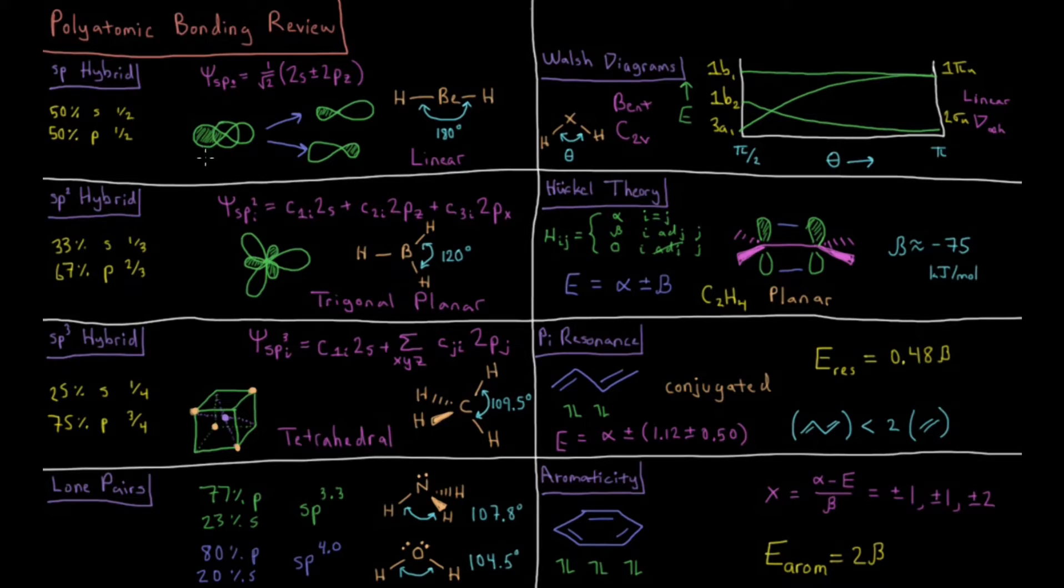One way we can do that is to have an equal addition of the 2s and 2pz orbital if this internuclear axis is the z axis. If we add those equally, we get two sp orbitals that are 50% s and 50% p. One points towards this hydrogen overlapping with its 1s, one points towards this hydrogen overlapping with its 1s, and we get our desired 180 degree linear bond angle.